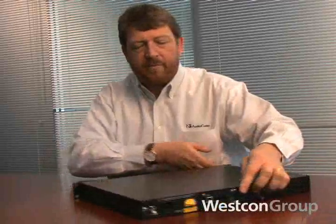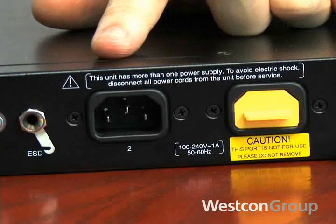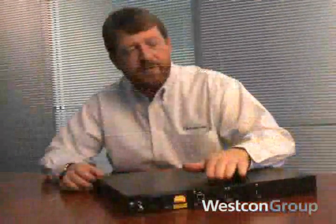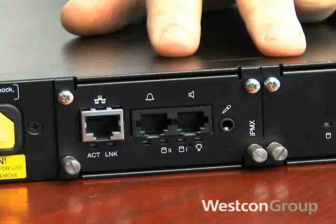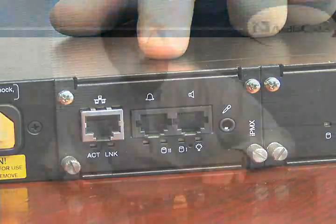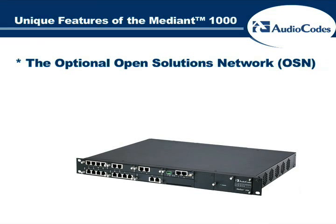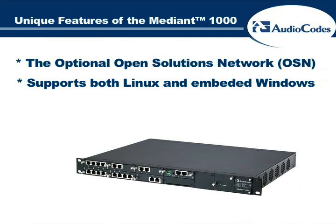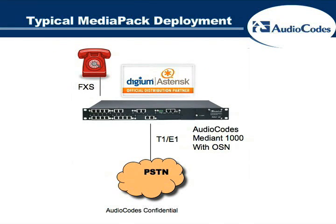As we move around to the back of the unit, we also have the redundant power input interfaces for AC power. And in this particular unit, we also have our optional OSN processor module for third-party applications. The unique feature of the Mediant 1000 is the optional Open Solutions Network, or OSN, application processor. This OSN processor is a standard Intel-based server embedded within the media gateway, allowing third-party applications to reside within the gateway. Supporting both Linux and embedded Windows, the OSN processor can host a wide range of applications, including IP PBX, SIP proxies, messaging, conferencing, and IVR applications. A perfect example would be Digium's Asterisk IP PBX.